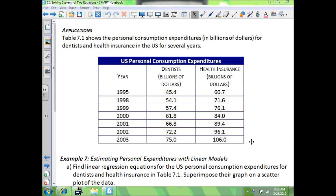The big thing here is it gives us years 1995 through 2003 and it gives us all these numbers for dentists and health insurance. So what you want to do for the year, let x equal time where x equals zero will be 1990.